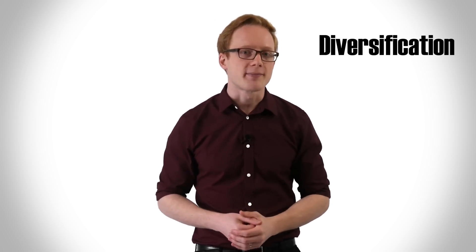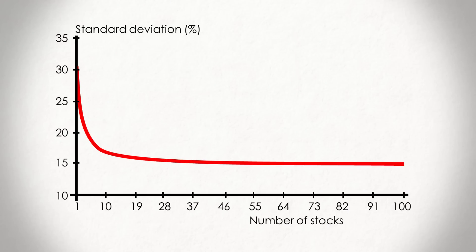If you graph it, this relationship might look something like this. The first few positions have a dramatic effect on volatility, but as you reach 20 stocks or so, the benefit plateaus. You'll also see that diversification doesn't remove all volatility from the account.